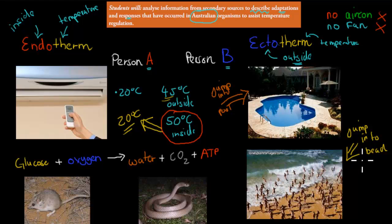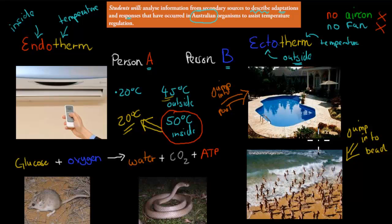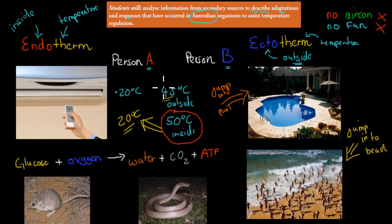Person A was the endotherm — he can control his inside temperature by himself, just having his aircon set at 20 degrees Celsius. Whereas the ectotherm doesn't have that luxury, with no aircon or fan, so they have to use the pool or the beach to cool down. And that's the same with endotherms and ectotherms. Endotherms — we, as mammals, can do that with our sweating and everything else, so it's always going to be constant. Whereas ectotherms — reptiles, fish, amphibians — they have to use their environment, only their environment, to keep it constant.